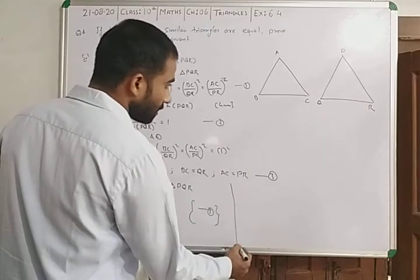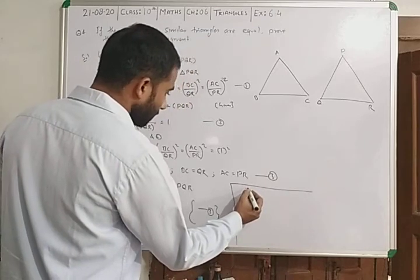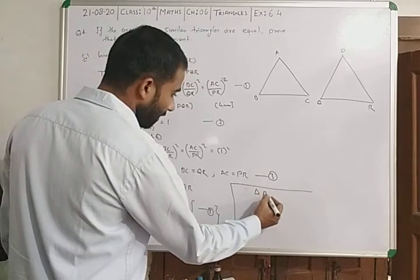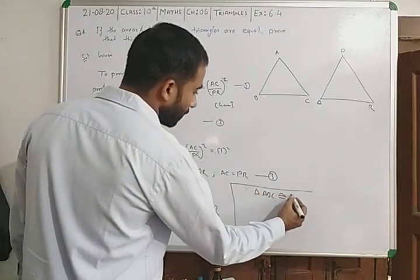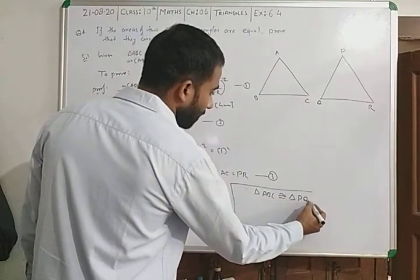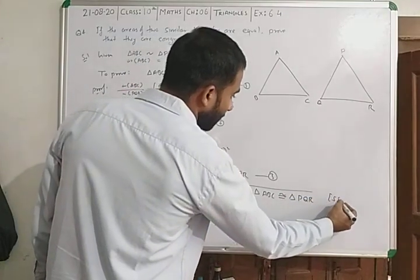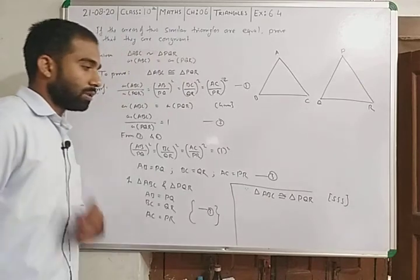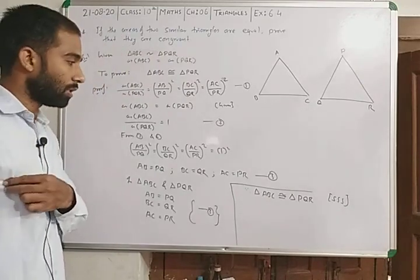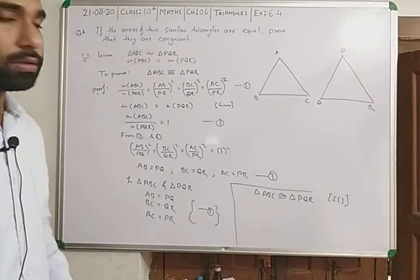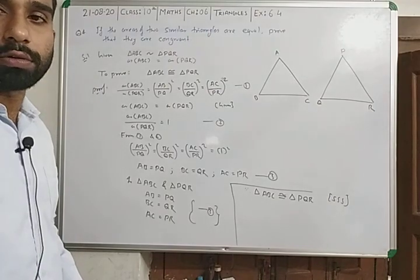Hence, triangle ABC is congruent to triangle PQR by side-side-side congruency rule. I hope you got the answer. Thank you for watching.